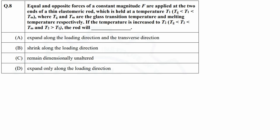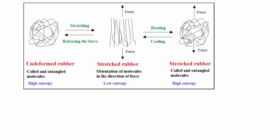Question 8 says that a thin elastomeric rod is held at temperature above Tg and below Tm and equal and opposite forces were applied. What will happen to the rod if the temperature is further increased and it is still below the melting point? Will it expand, shrink, remain constant, or expand in the loading direction?